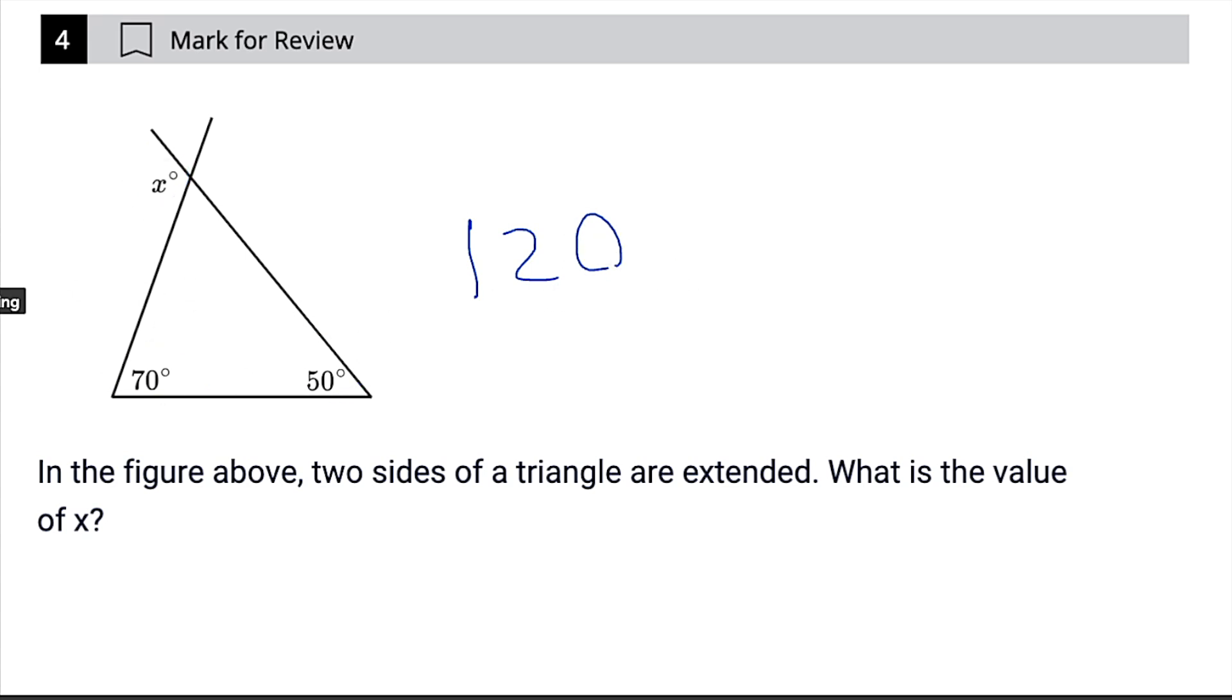And just to reiterate that rule, if we had another line popping out over here, this angle a would be equal to this one and this one combined, right? If this kept going, and we were talking about this angle, we'll call it m, this would be equal to this angle and this angle combined. So again, that's the exterior angle theorem, memorize it, super useful.